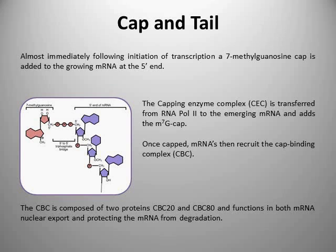Once this has happened, the capping enzyme complex dissociates from the 5' cap and is replaced by a second complex called the cap binding complex. The cap binding complex is made up of two proteins called CBC20 and CBC80 — cap binding complex 20 and 80. These two proteins are very important because they're required for the successful nuclear export of the mRNA into the cytoplasm, and also for protection of the mRNA from endonucleases which would otherwise degrade it before it ever made it that far.